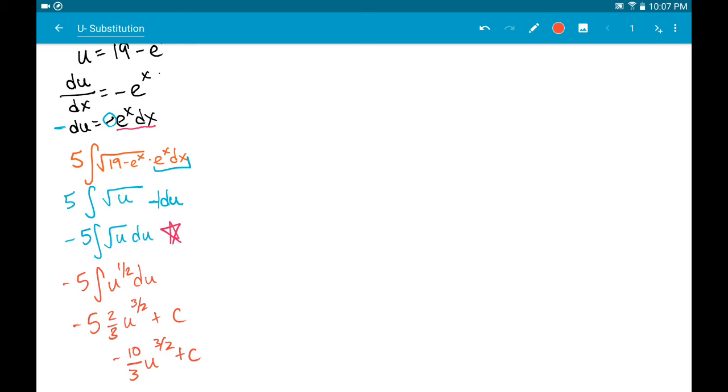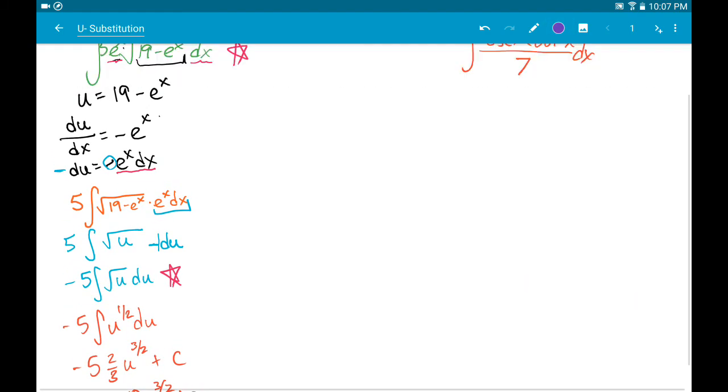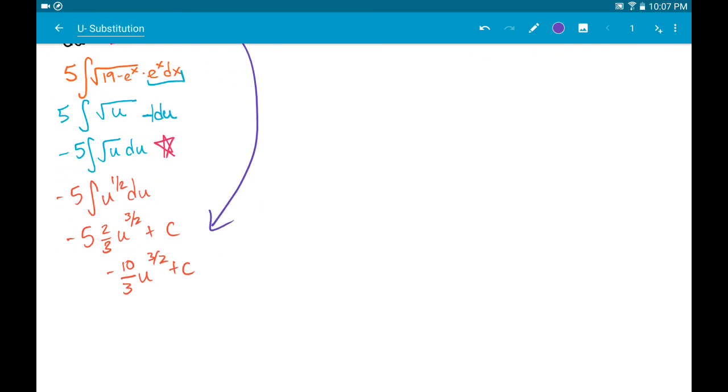But our original integral, everything was in terms of x. And so the very last part here is you have to remember that you have a value for u, which was 19 minus e to the x. And we need to put that value back into our antiderivative and replace our u with the original. And that is the final answer.